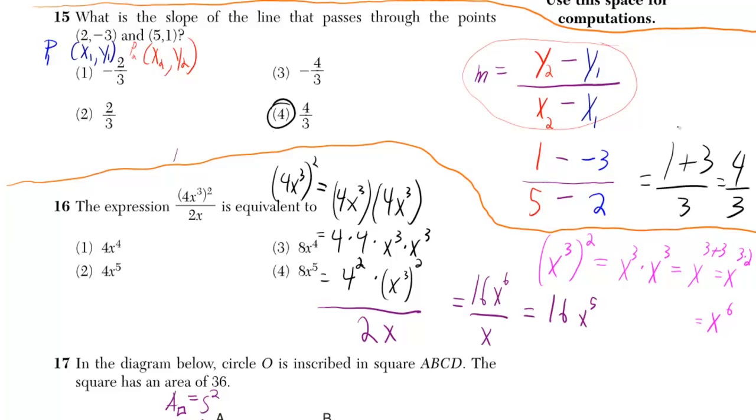Let's call (2, -3) point 1, with x-coordinate number 1 and y-coordinate number 1. So 2 will be our x-coordinate number 1, negative 3 will be our y-coordinate number 1. Let's call (5, 1) our point 2, with x-coordinate number 2 and y-coordinate number 2.